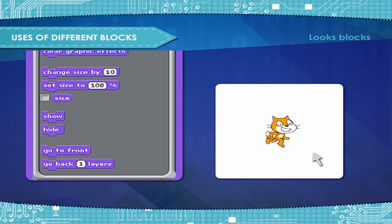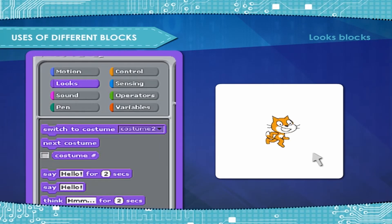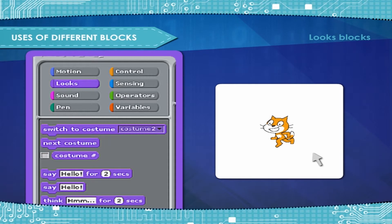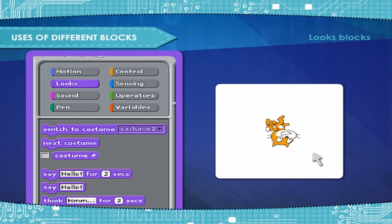Show — shows the sprite. Hide — hides the sprite. Switch costume to — changes the sprite's costume to the specified one. Next costume — changes the sprite's costume or backdrop to the next one in the costume list.